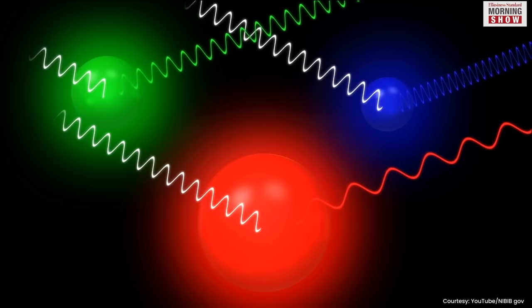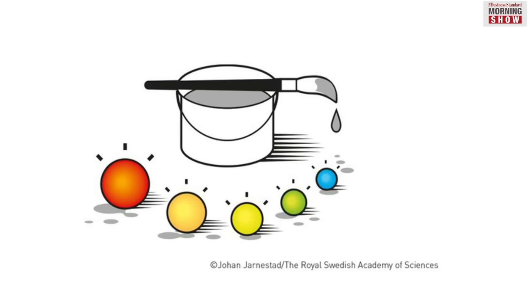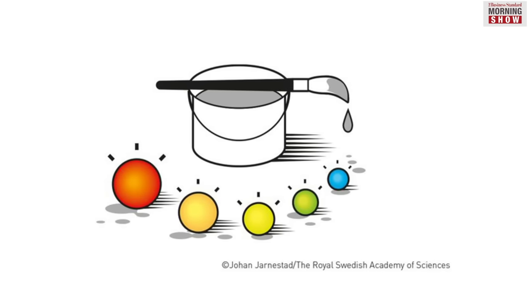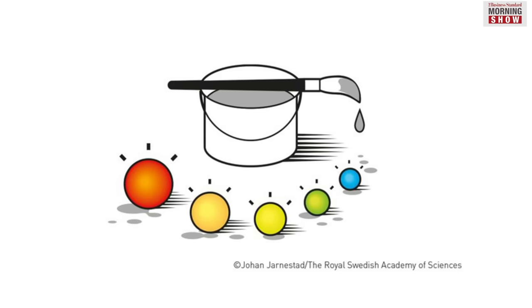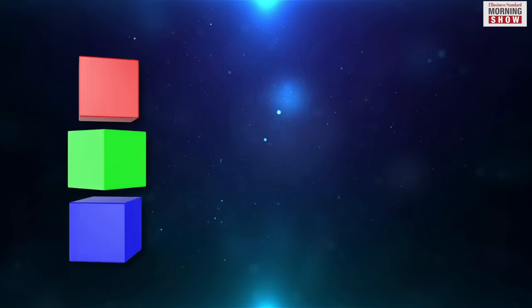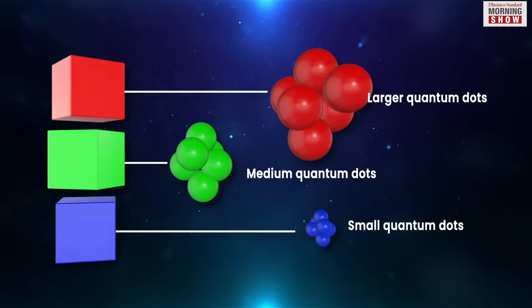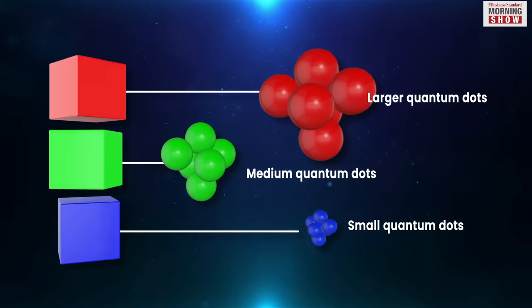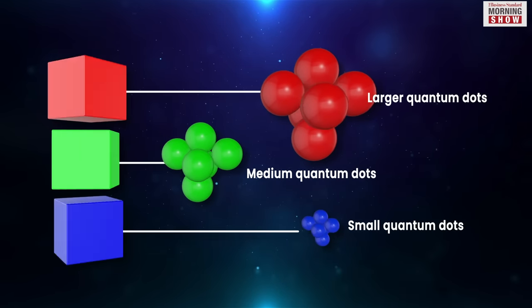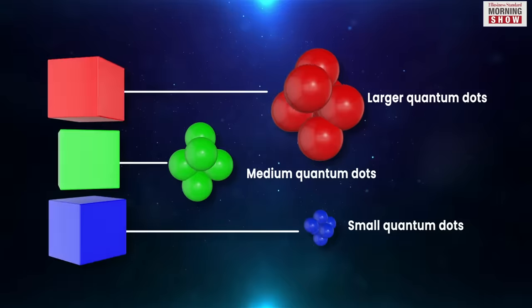Smaller dots emit shorter wavelengths of blue light. This is unusual in classical physics. Normally if you want to paint three boxes red, blue, and green, for each of these colors you will use different molecules and constellations of atoms. But in quantum dots, the same molecules and atoms can get you new colors just by altering their size.